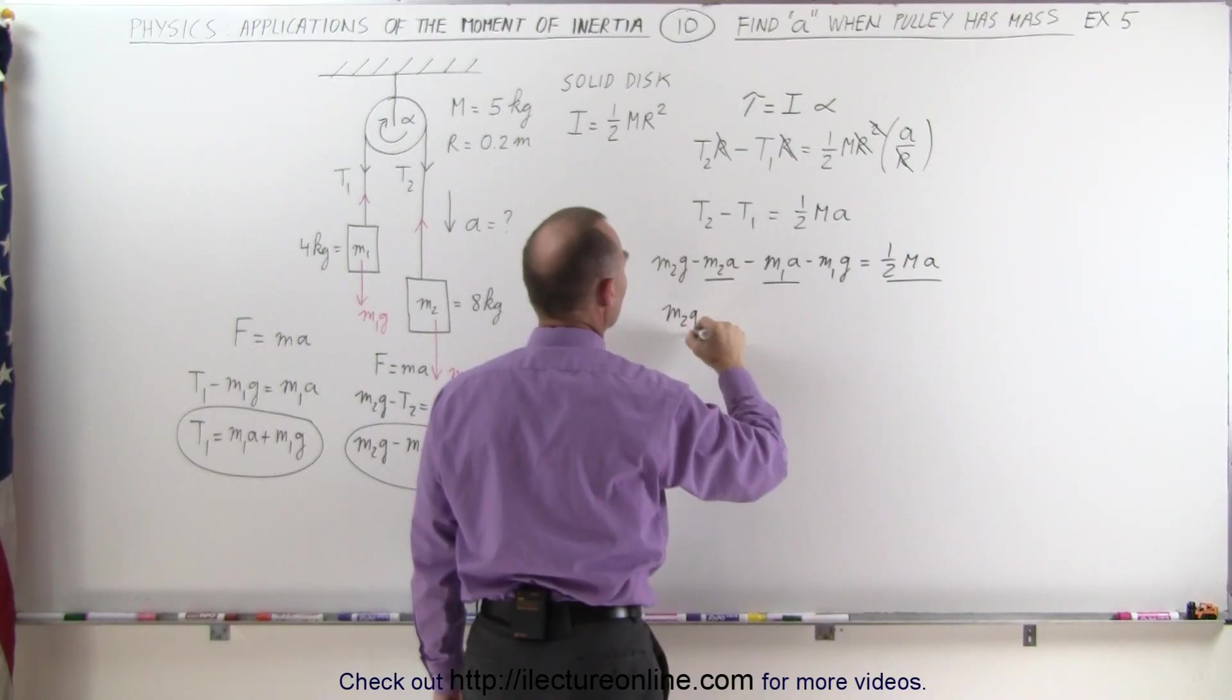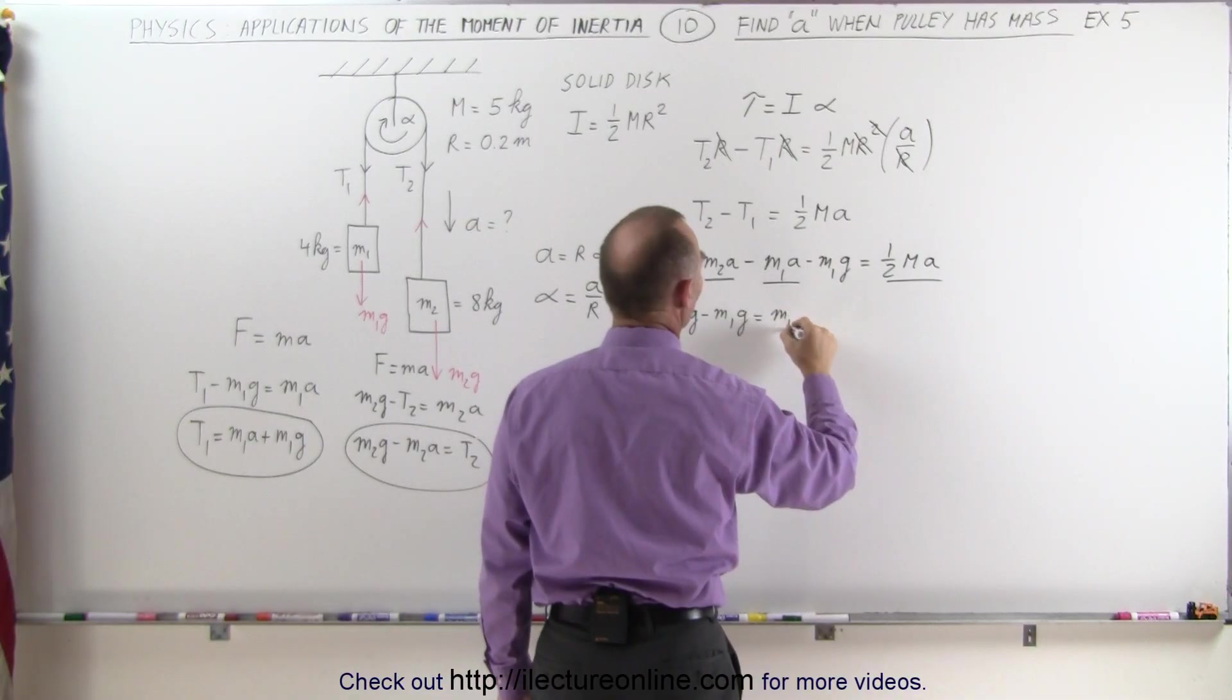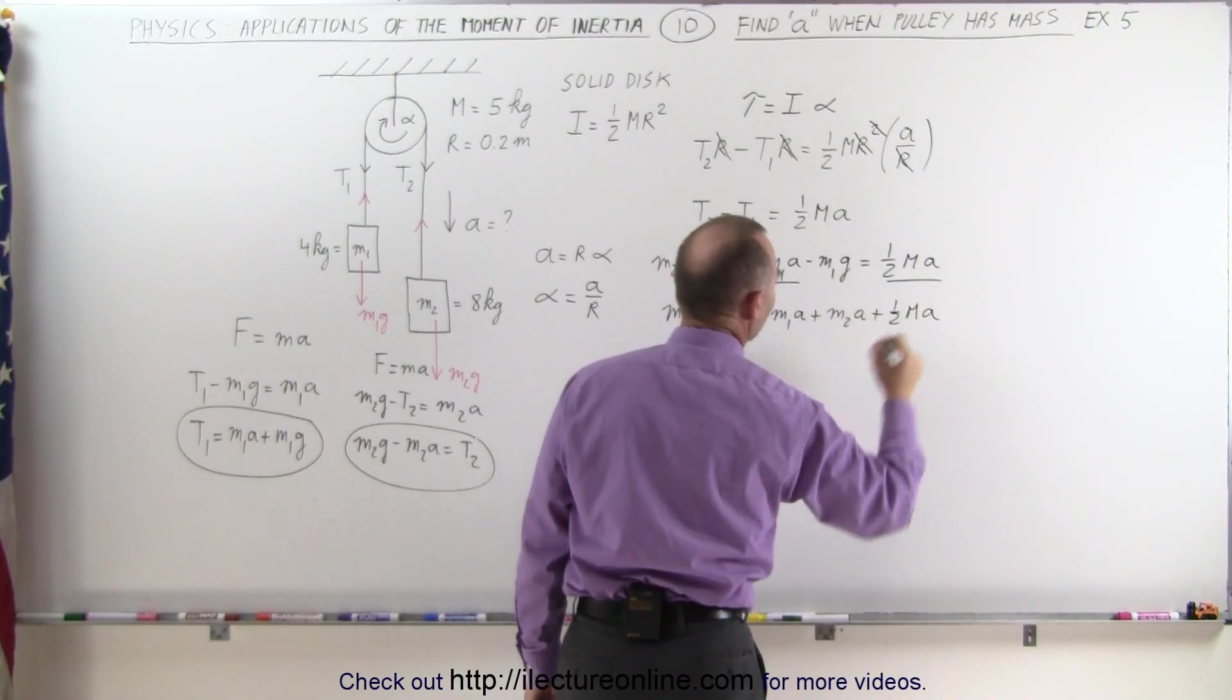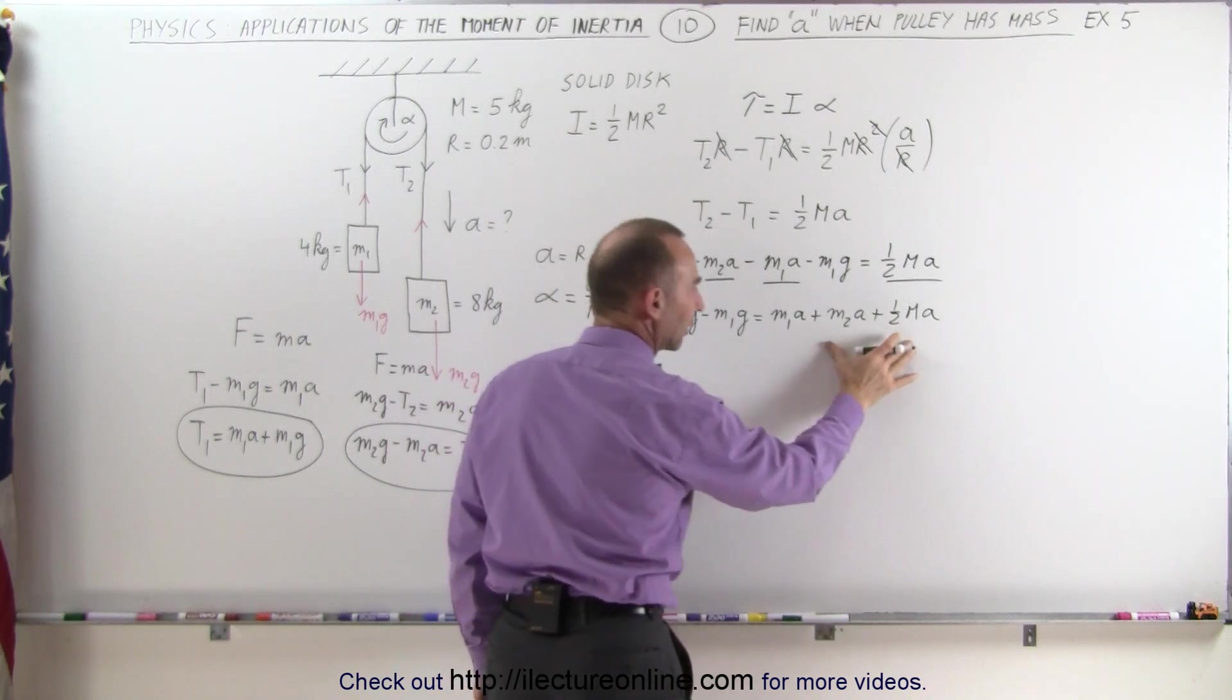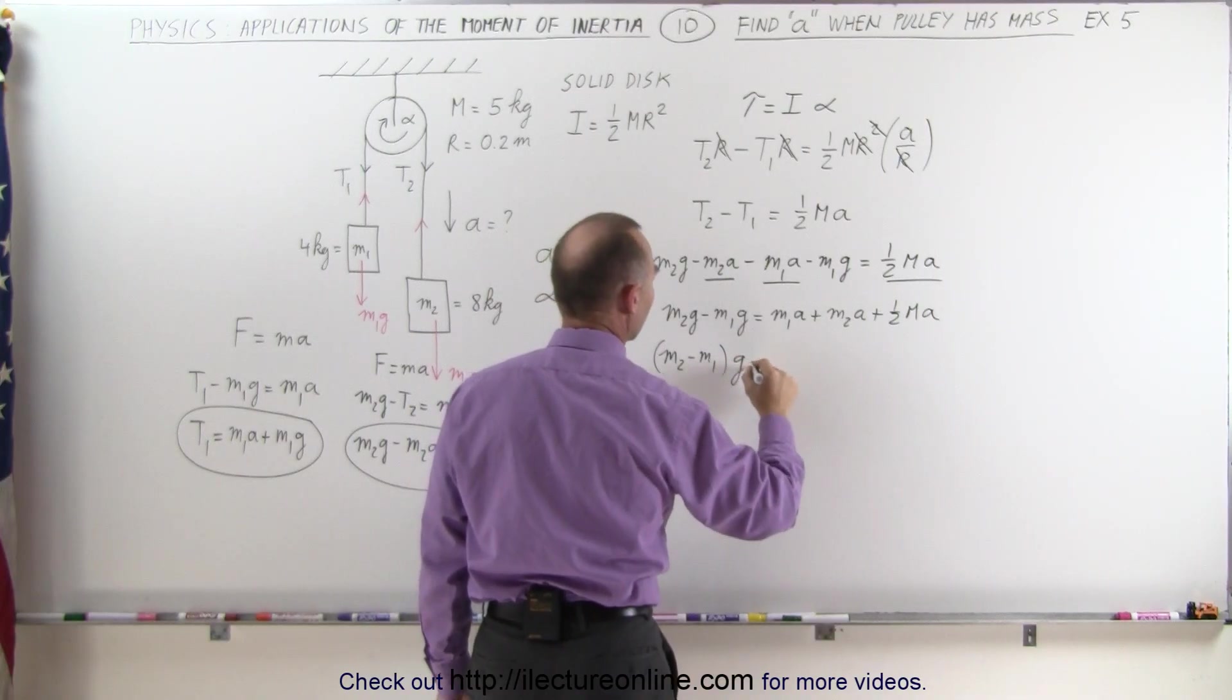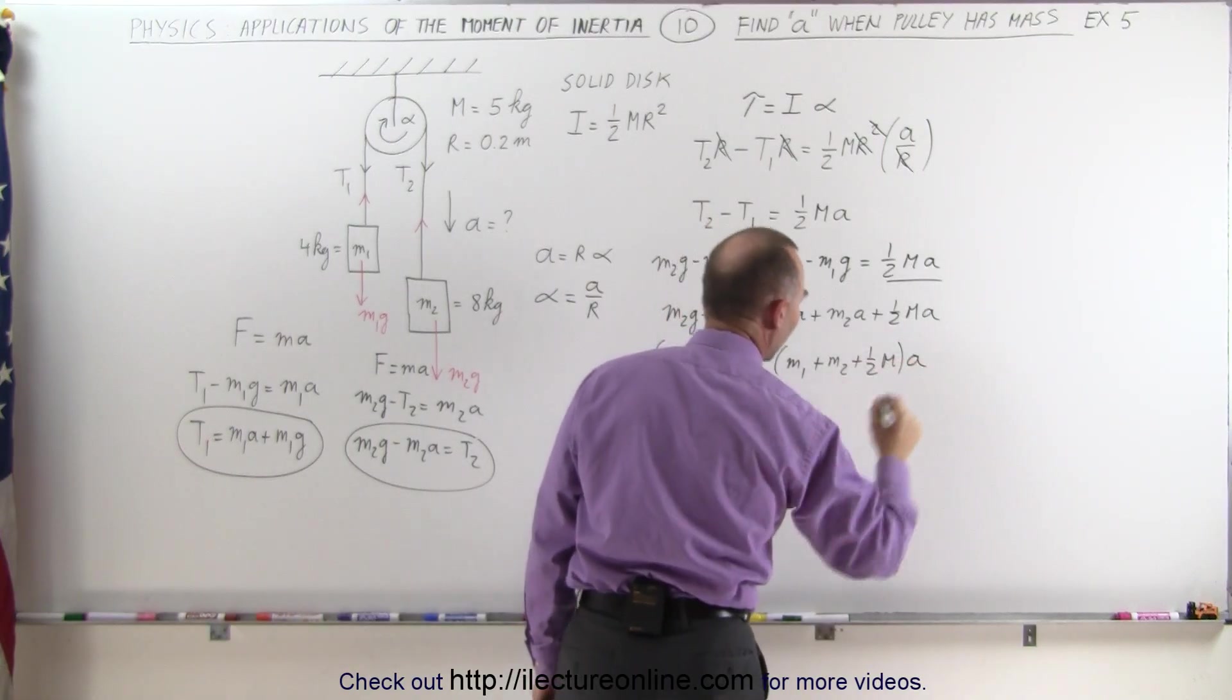So we want all those terms to be on one side, everything else on the other side. We have M2G minus M1G is equal to, moving this across, we get M1A plus M2A plus 1 half, the mass of the pulley, times acceleration. Factoring out a G on the left side, factor out an A on the right side, we get M2 minus M1 times G is equal to M1 plus M2 plus 1 half, the mass of the pulley, times acceleration.